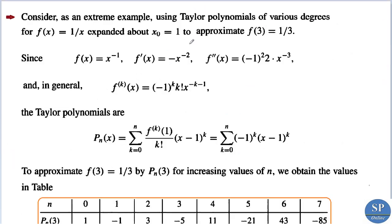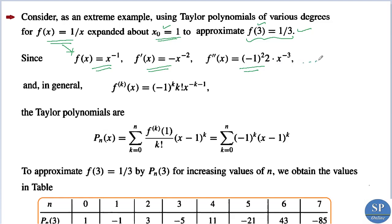For example, consider f(x) = 1/x and approximate f(3) = 1/3 using Taylor polynomials at x_0 = 1. Since f(x) = x^{−1}, we have f'(x) = −x^{−2}, f''(x) = (−1)^2 · 2 · x^{−3}, and in general the k-th derivative is f^{(k)}(x) = (−1)^k · k! · x^{−(k+1)}.